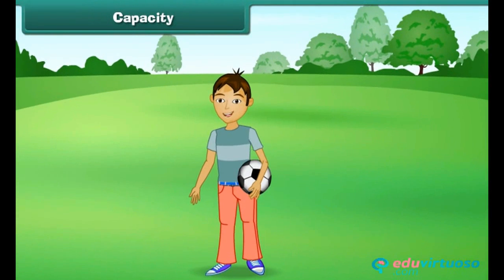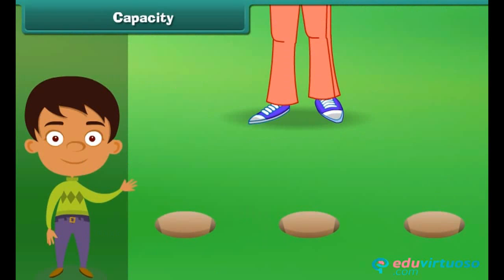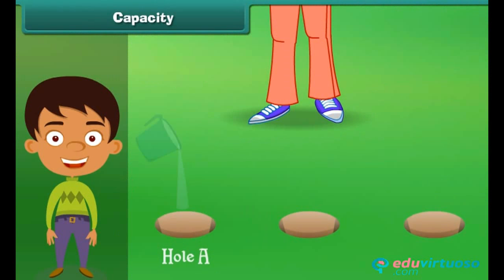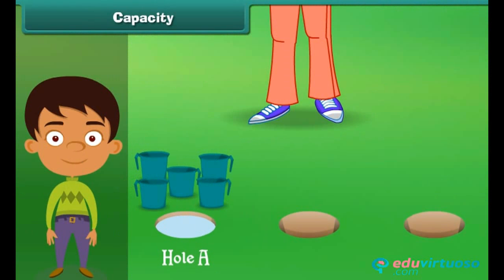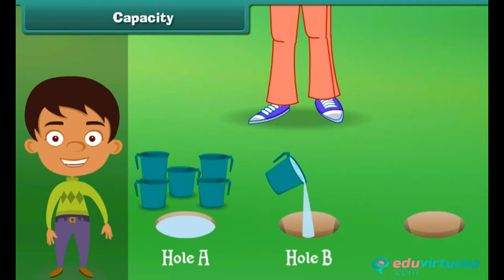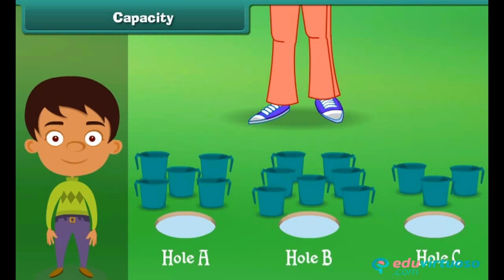Rama was playing in the garden. He saw three holes in the playground. He decided to fill them with water. Hole A gets filled with five mugs of water. Hole B gets filled with seven mugs of water. And hole C gets filled with three mugs of water.